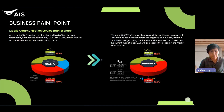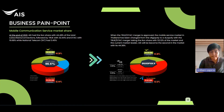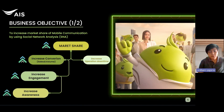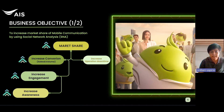First, we have to know the business pain point of this situation. In Thailand, the big three of mobile communication is AIS, True, and DTAC. AIS is the biggest market share at around 44%. But at the end of 2021, True and DTAC decided to merge together, which changed the market share. AIS became second in market share. So the main business objective is to increase market share. We focused on three things: increase awareness, engagement, and conversion.